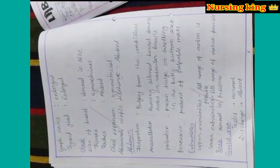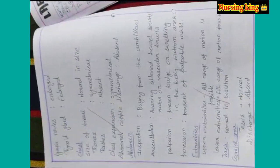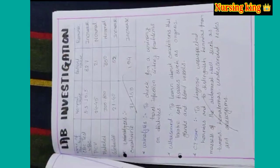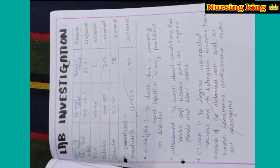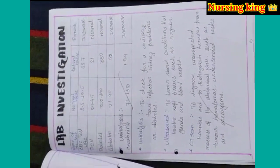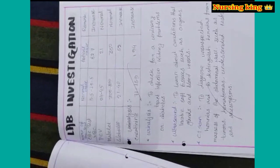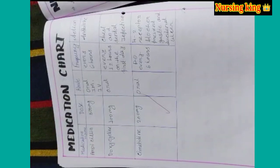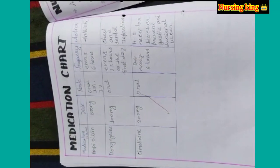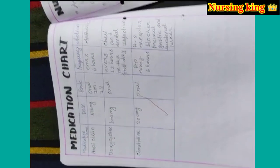You have to check every portion — what abnormalities are there, which portion has abnormalities — you have to check and write. Then investigations: what investigations have been done, you have to mention. Then the medication chart: what medications are given for that condition, you have to mention everything.